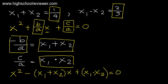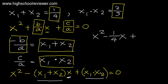Substituting the values, we have x squared minus 1 over 4 times x plus 2 over 3 equals 0. To cancel out the denominators, we multiply both sides of the equation by the product of 4 and 3, which is 12.